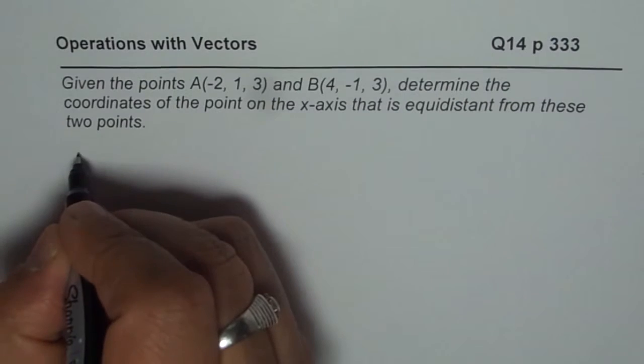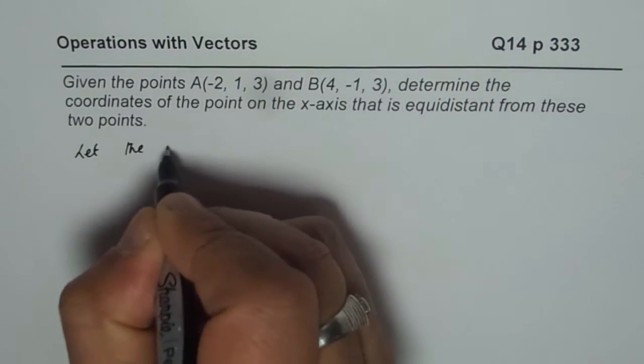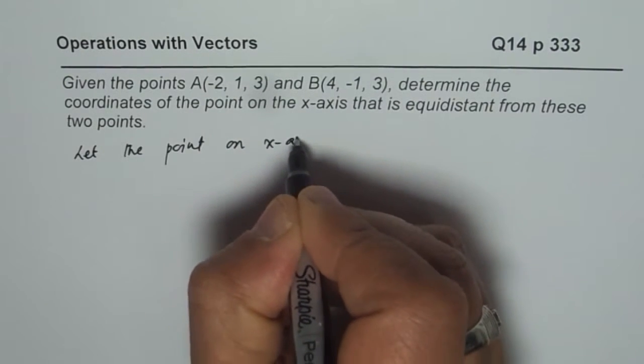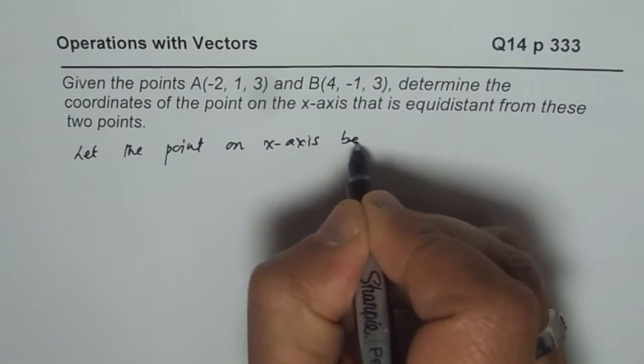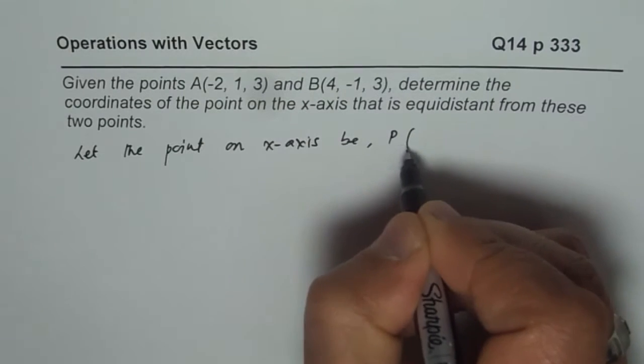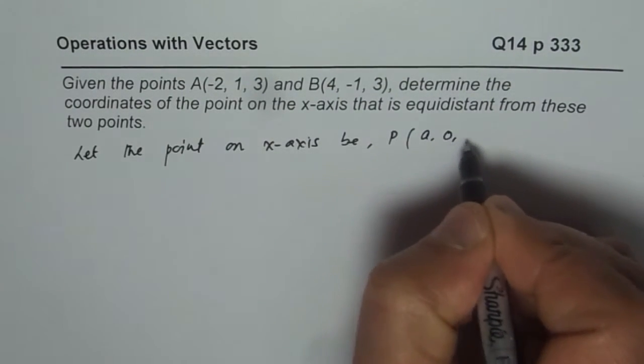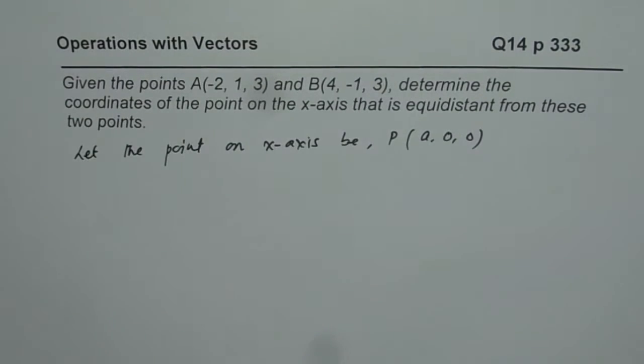Let the point on x-axis be P. So let it be P, whose coordinates will be what? x-axis means (a, 0, 0). So that is what the coordinates will be.